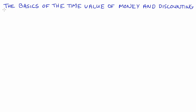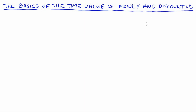In this video I'm going to go through just the basics of the time value of money and discounting. Let's say we have some money today — let's say ten dollars — and I'm going to write here that we're at time period t equals zero, which will be the present period, so that's like today.